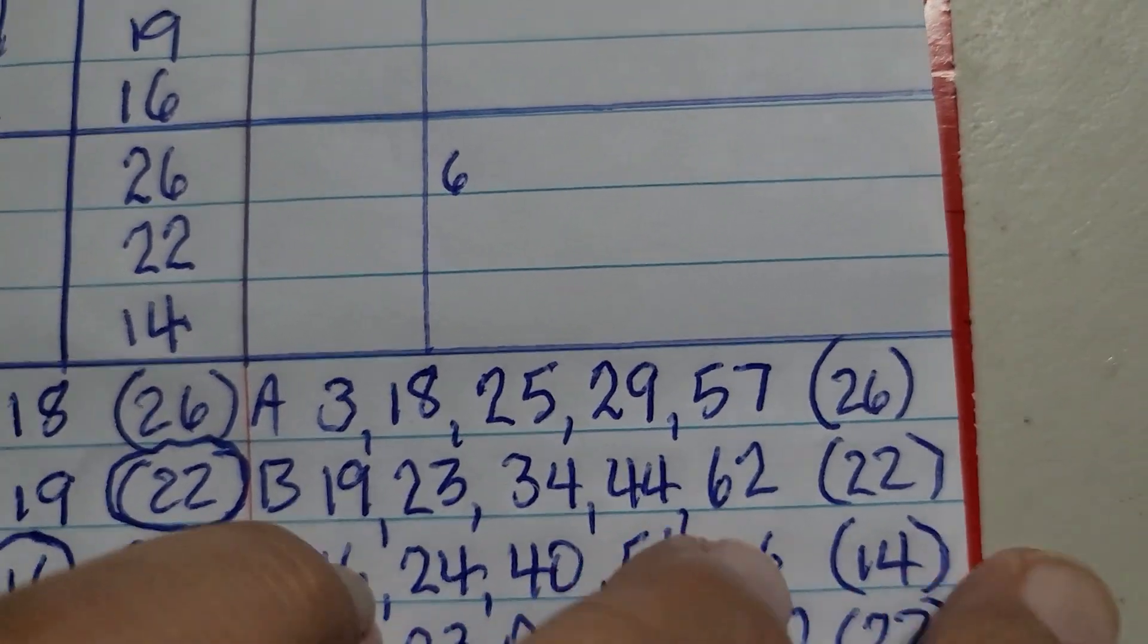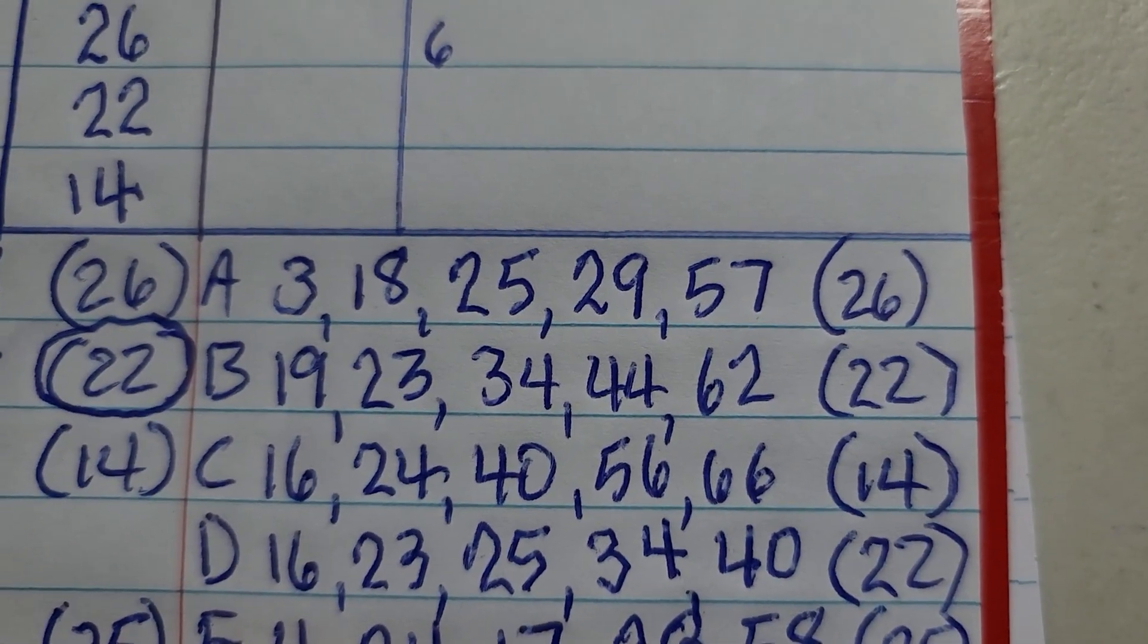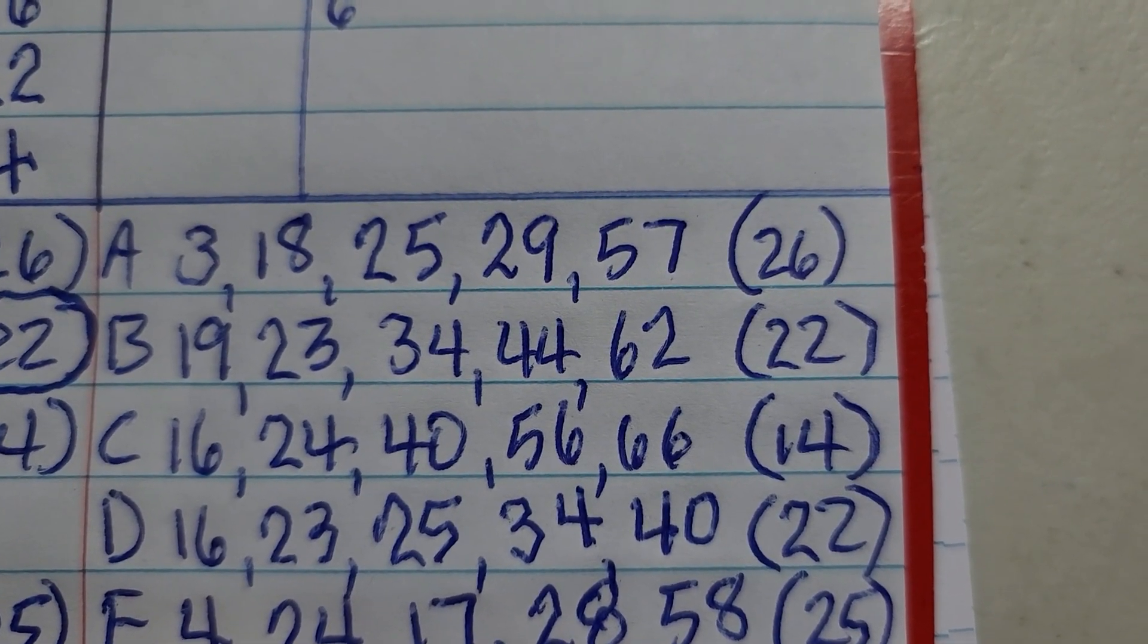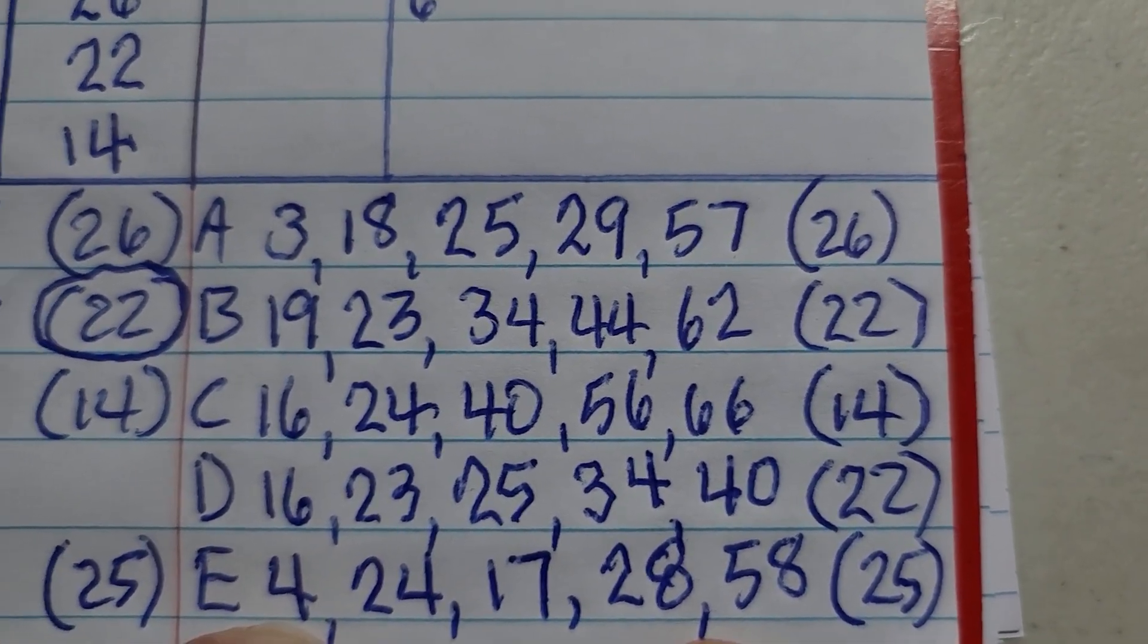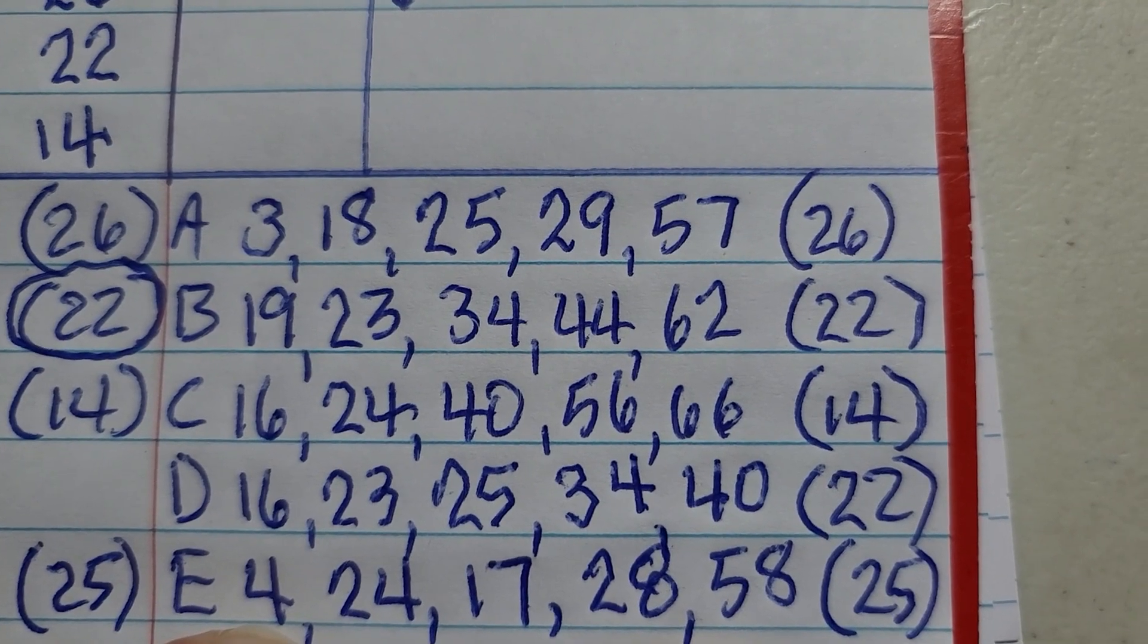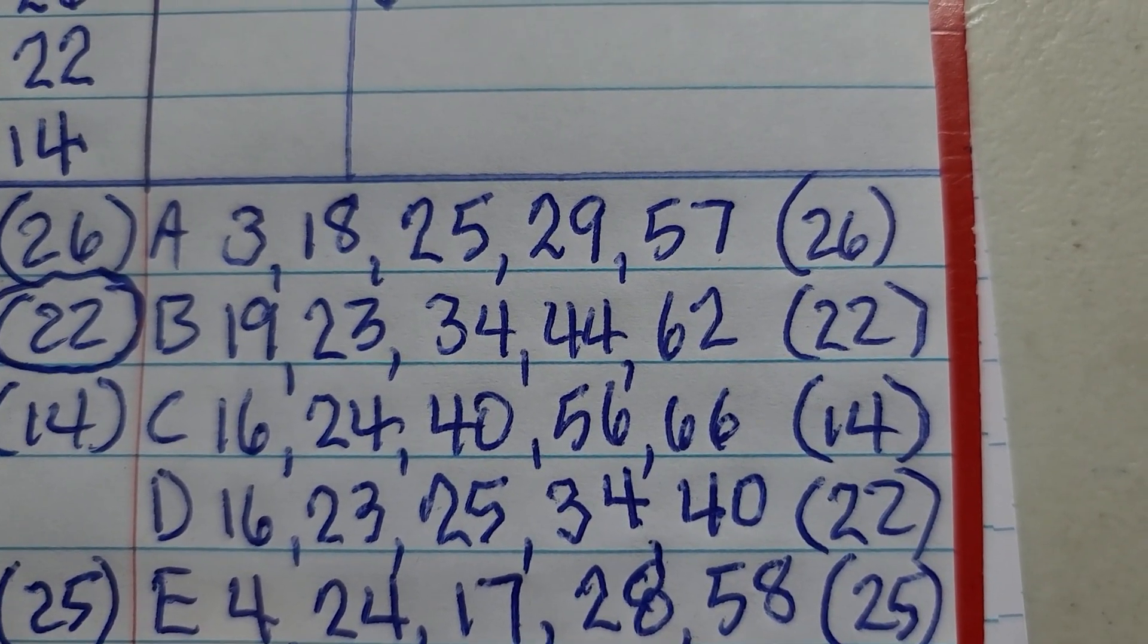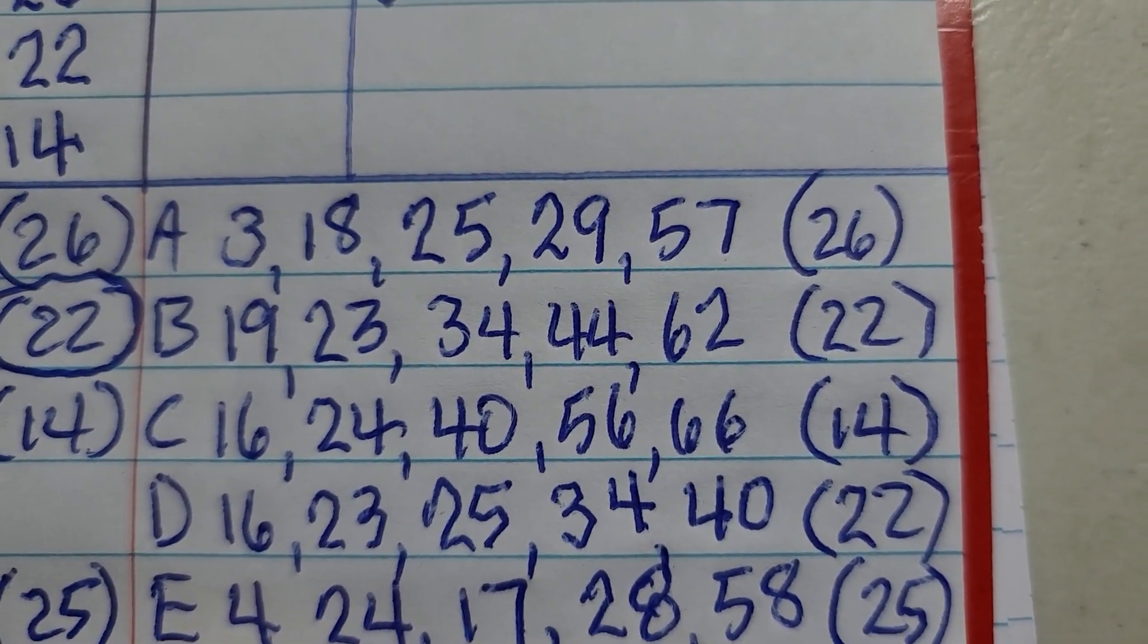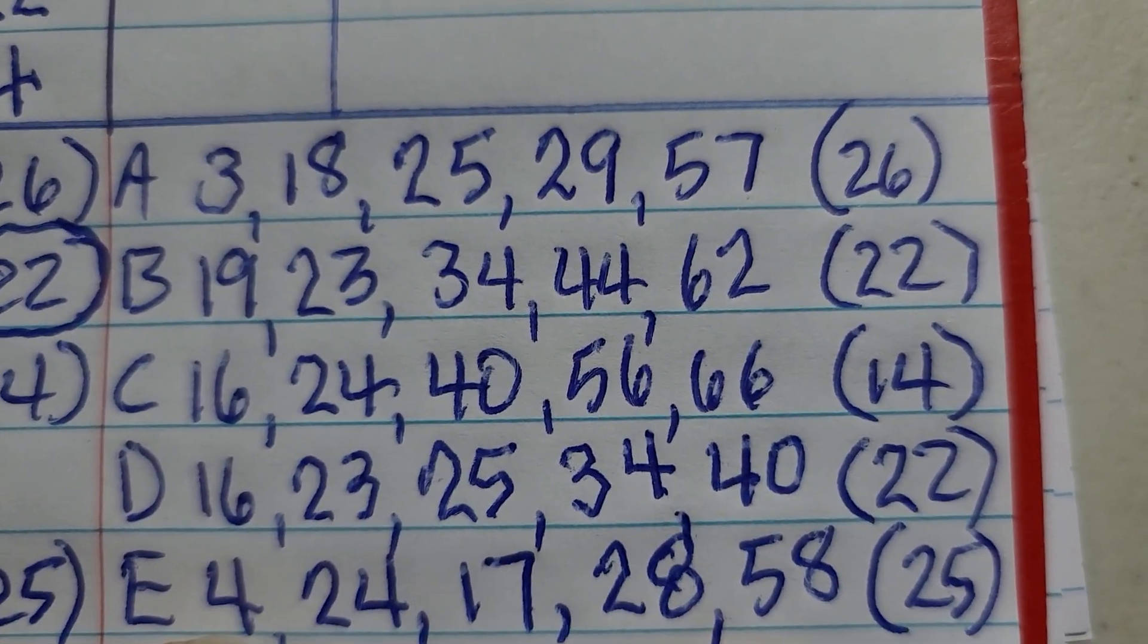So here are the number sets that I created for tomorrow's draw. Set A is 3, 18, 25, 29, 57, and the Powerball is 26. Line B is 19, 23, 34, 44, 62, and the Powerball is 22.